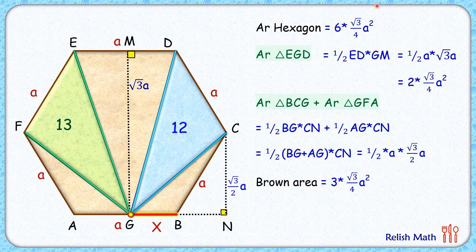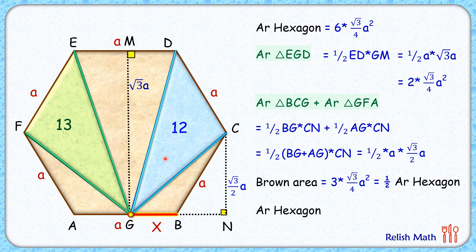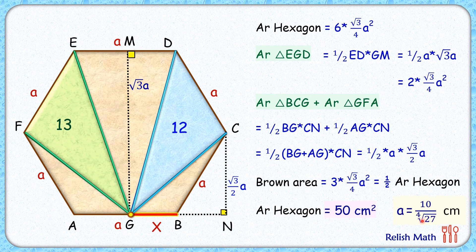So the three brown areas are equivalent to three equilateral triangles, which is half of the six equilateral triangles making up the hexagon. Therefore, the green and blue triangles together are also half the area of the hexagon. The total hexagon area is twice the sum of the green and blue areas: 2 × 25 = 50 cm². Comparing with the hexagon area formula, we get the side length a = 10 / ⁴√27 centimeters.